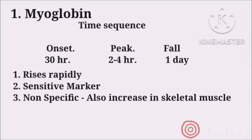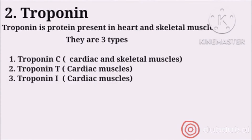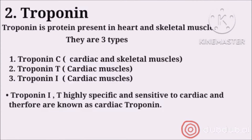However, if the level of myoglobin is not increased in the blood, we can say with confidence that the patient has not had a heart attack. So myoglobin rises rapidly, is a sensitive but non-specific marker. The normal range of myoglobin in blood is 25 to 72 nanograms per ml. The second cardiac marker is troponin.